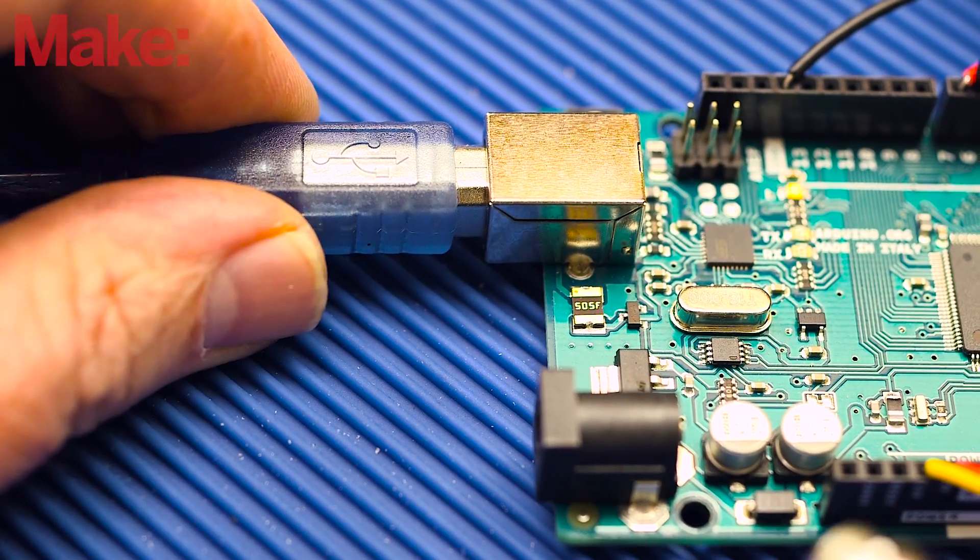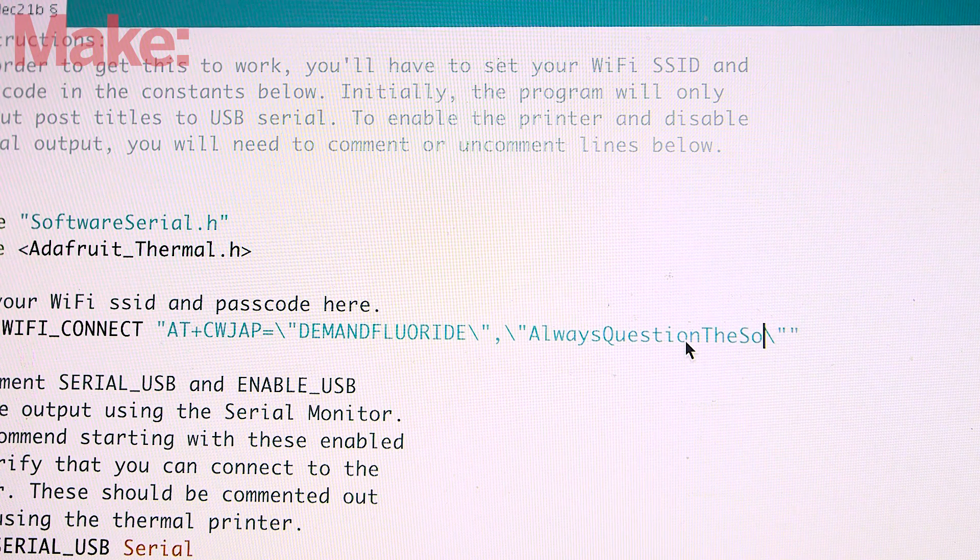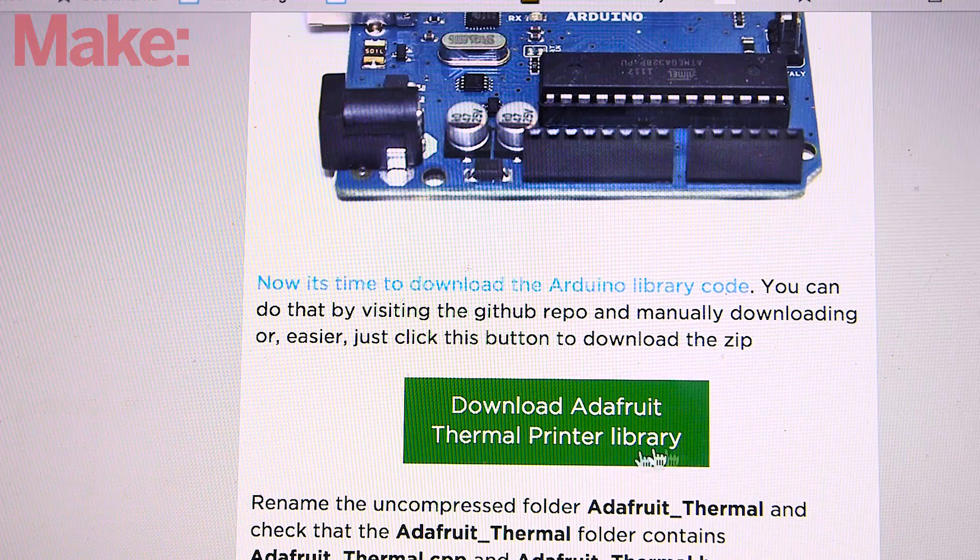Now we'll program the Arduino. Load up the sketch provided in the description below, and make sure to update it with your Wi-Fi network details. You'll also likely need to add the Adafruit thermal printer libraries before uploading the code.